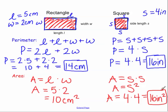And that's an overview of the perimeter and area for a rectangle and a square.